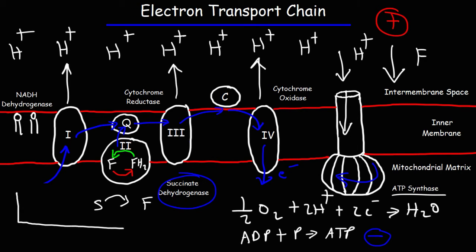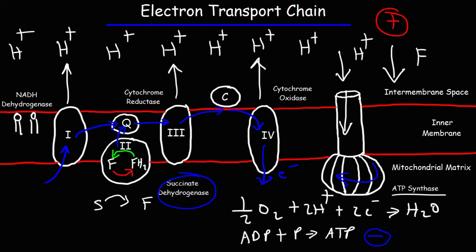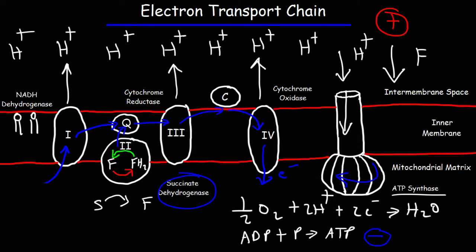This process is known as chemiosmosis — we're using diffusion to create ATP. So the electron transport chain involves electrons traveling from complex one all the way to complex four. Chemiosmosis is the production of ATP using the diffusion of protons as they flow through ATP synthase. When you combine the electron transport chain and chemiosmosis, you have oxidative phosphorylation.